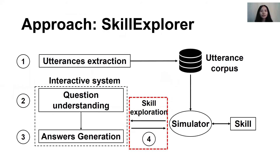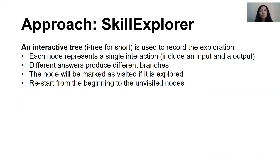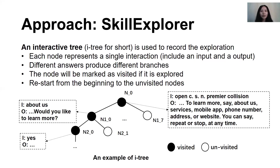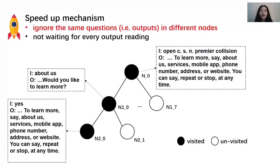We also record the exploration. We create an interaction tree where each node represents a single interaction, which includes an input and corresponding output. Different answers produce different branches, and a node is marked as visited if it is explored. If the current path ends, Skill Explorer restarts from the beginning to an unvisited node. For example, when the first utterance opens a skill as shown at node N0, Skill Explorer parses the output as a question and generates eight answers, storing them from N10 to N17. To speed up exploration, we ignore the same output in different nodes, because if a question repeats again and again the tree may not terminate. For example, the output in N20 is the same as N0, so we end the current path.